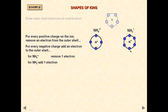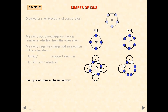NH2⁻ has got six electrons in the outer shell. Next, pair up the electrons the way we did for simple molecules. In the case of NH4⁺, there are four hydrogen atoms and four electrons in the outer shell, so each hydrogen is bonded — one electron comes from hydrogen and one from nitrogen for every single bond. That gives you NH4 positive and NH2 negative.